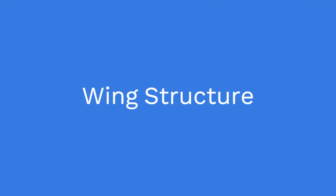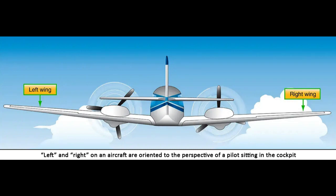The wings of an aircraft are designed to lift it into the air. Their particular design for any given aircraft depends on a number of factors such as size, weight, use of the aircraft, desired speed in flight and at landing, and desired rate of climb. The wings of an aircraft are designated left and right, corresponding to the left and right sides of the operator when seated in the cockpit.